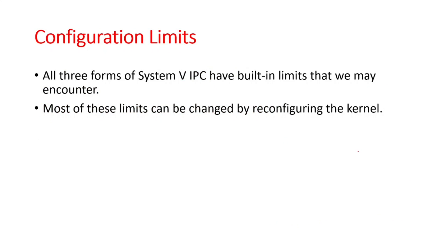Regarding configuration limits: all three forms of System 5 IPC have built-in limits that may be encountered. These limits relate to restrictions on the amount of data processes can read and write and how they communicate. Most of these limits can be changed by reconfiguring the kernel.